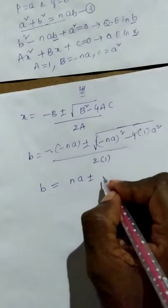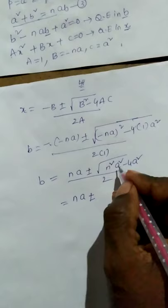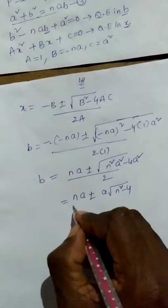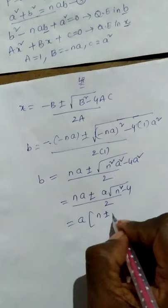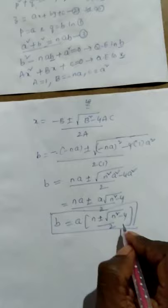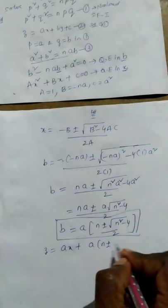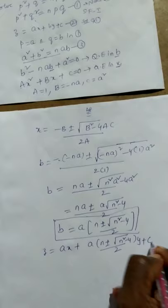Taking a as common: b = a·[n ± √(n² - 4)] / 2. We substitute this value of b in equation 2: z = ax + by + c. Therefore: z = ax + a·[n ± √(n² - 4)] / 2 · y + c. This is the complete solution of the given PDE equation 1.